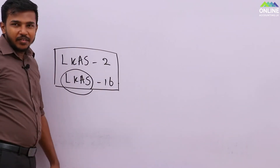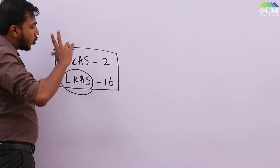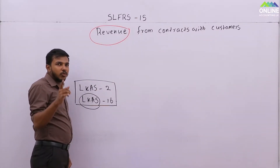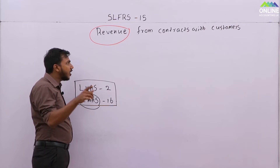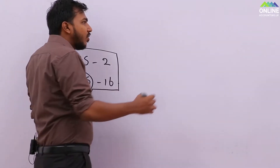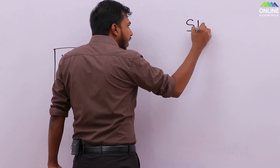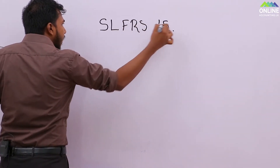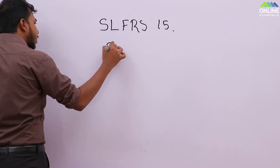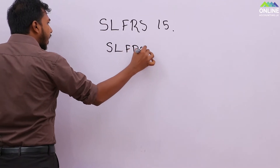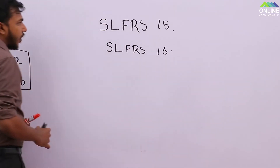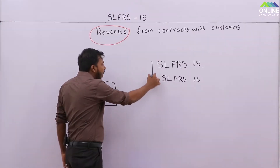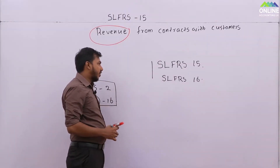For the syllabus, you will be getting two new accounting standards. One is SLFRS 15, and the other one is SLFRS 16. Those two are the recent modifications for your advanced level syllabus.